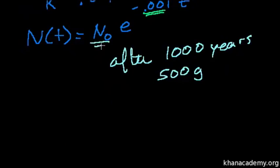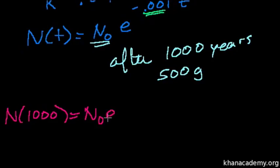So I need to figure out N₀, right? After 1,000 years, N(1000) equals N₀ times e to the minus 0.001 times 1,000, and that equals 500 grams.